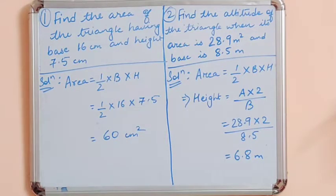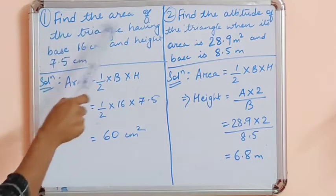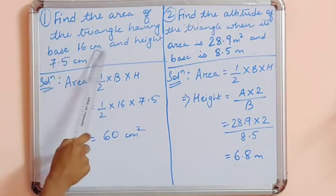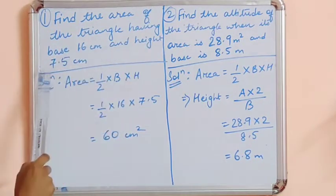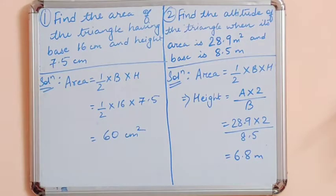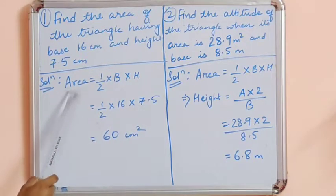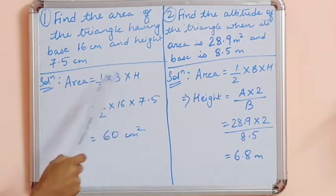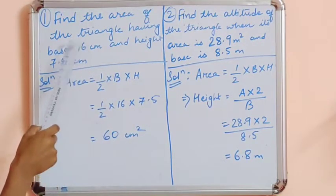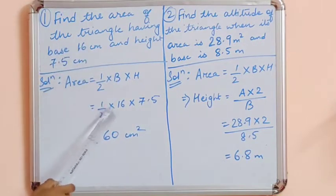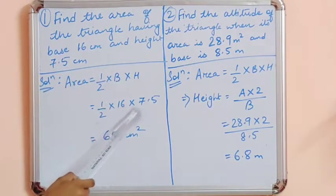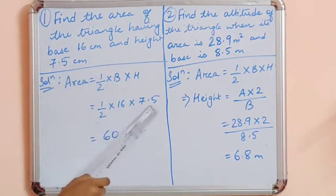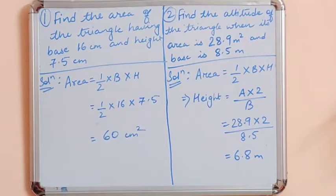Question number 1: find the area of the triangle having base 16 cm and height 7.5 cm. We know the formula for calculating area of a triangle is area equals half into base into height. So here, area will be half into base 16 cm multiplied by height 7.5 cm. So area is 60 cm².